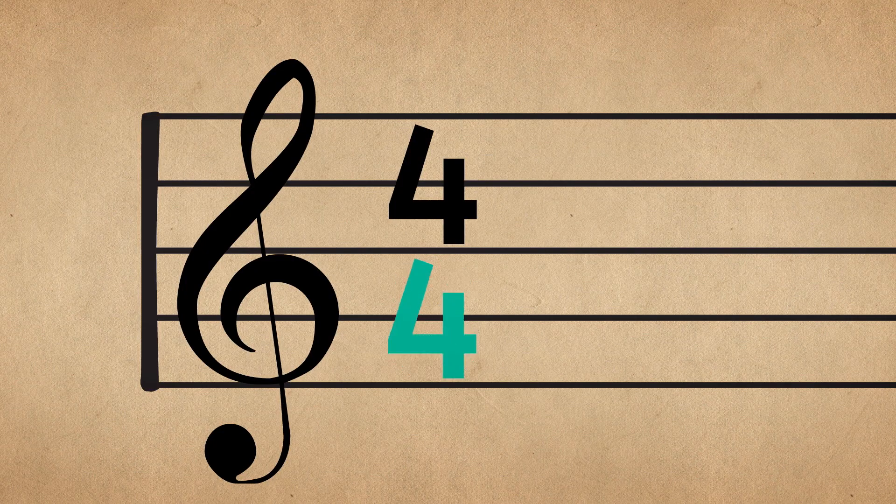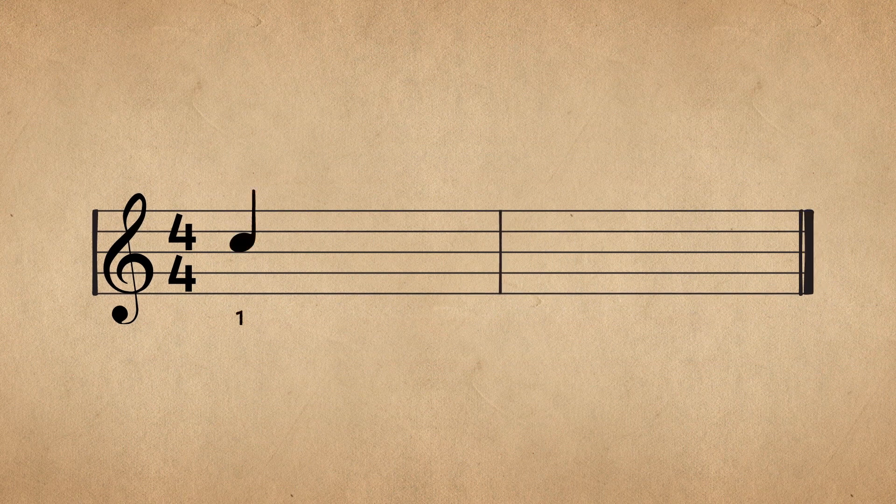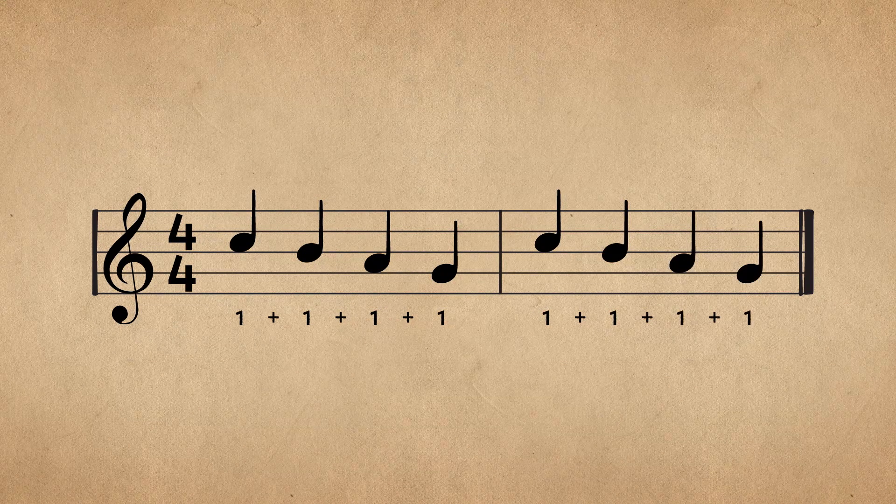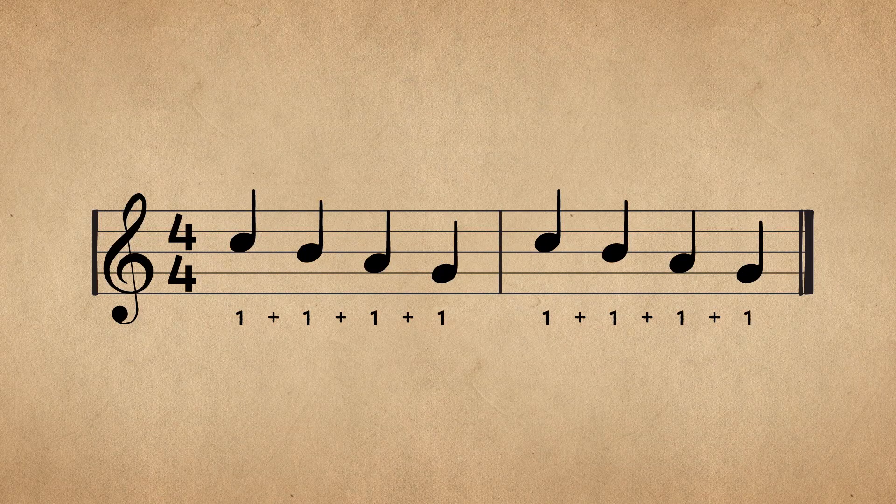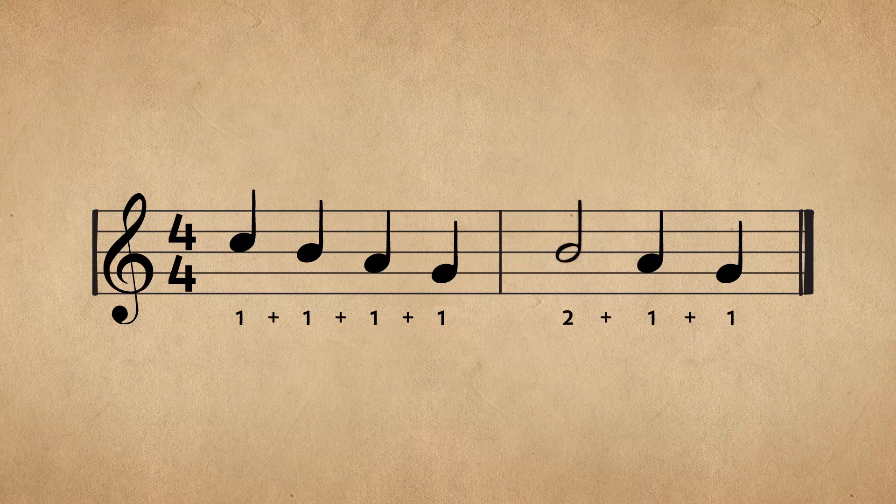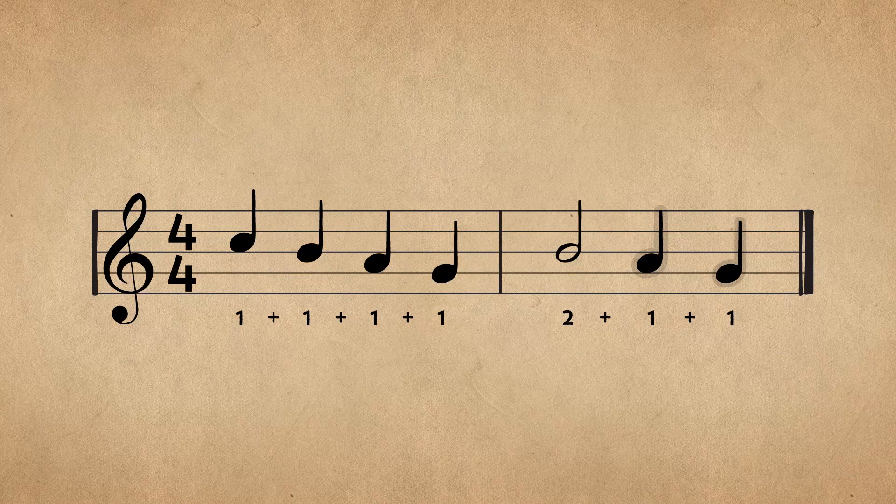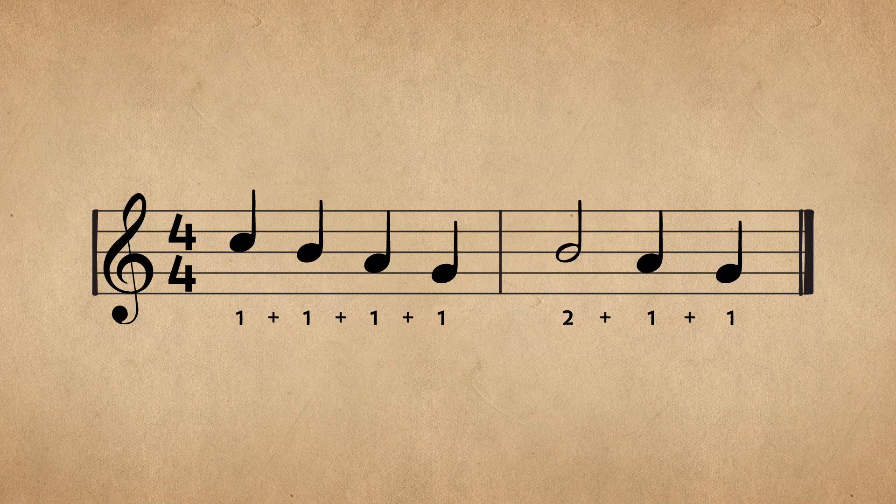So this time signature here tells us that there are four quarter notes in each bar. One, two, three, four, one, two, three, four, and so on. But like I said before, if we just stick to the beat, it gets kind of boring, so we'll replace some quarter notes with different rhythms. Notice that even though the number of notes in each bar has changed, the total number of beats in each bar hasn't.